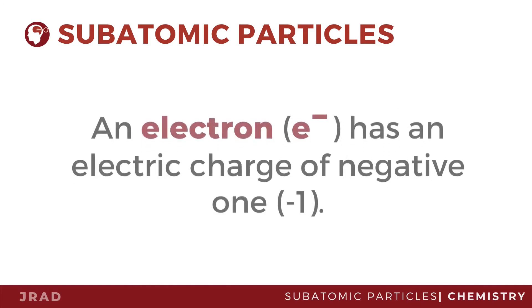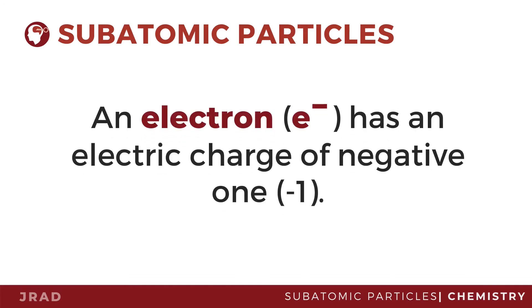An electron has an electric charge of negative one. Electrons are much smaller than neutrons and protons, and they are found revolving somewhere outside the nucleus.